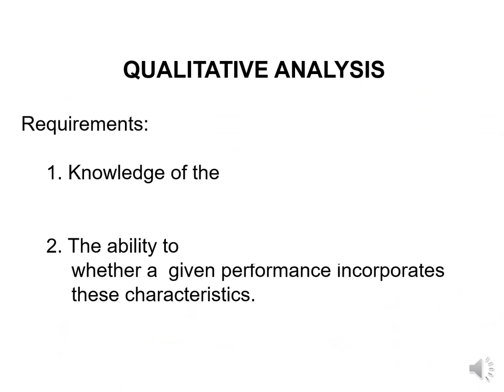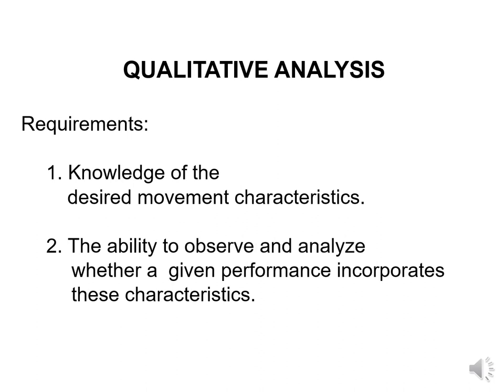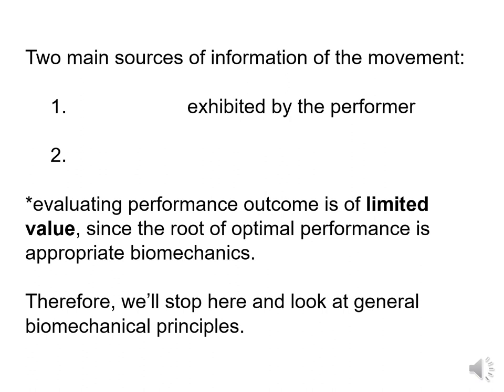When we look at qualitative analysis, we have two major requirements: the knowledge of the desired movement characteristics, and the ability to observe and analyze whether a given performance incorporates those specified characteristics. The two main sources of information are the technique exhibited by the performer and the performance outcome. While it may seem tempting to just evaluate their performance outcome, that is of limited value because the root of performance is appropriate biomechanics — so we want to look at technique and how general biomechanical principles are being executed.